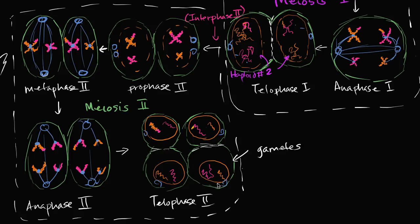These gametes are now ready for fertilization. Each has two chromosomes — and these are not homologous chromosomes; they code for different genes. Each of these gametes has the potential to fuse with another — if this is a sperm cell, it could fuse with an egg — and together they can create a diploid number of chromosomes with the full complement of homologous pairs. These gametes are for sexual reproduction.